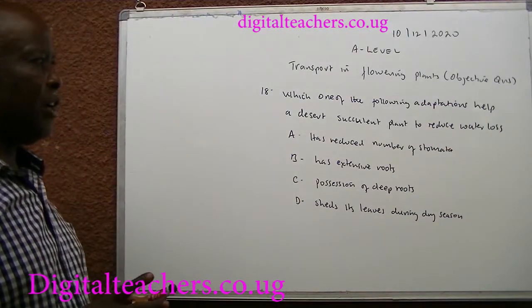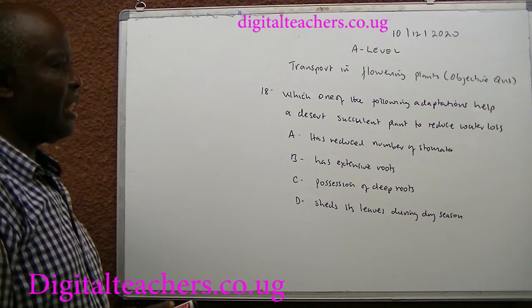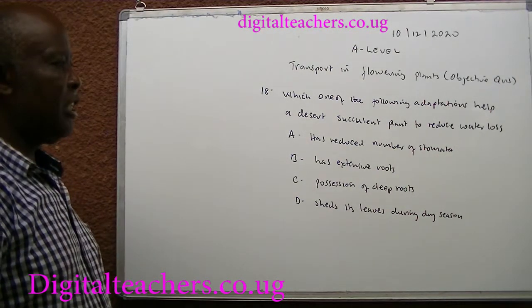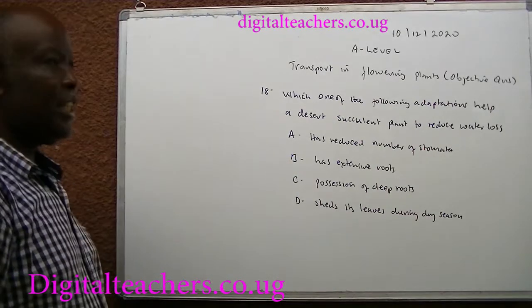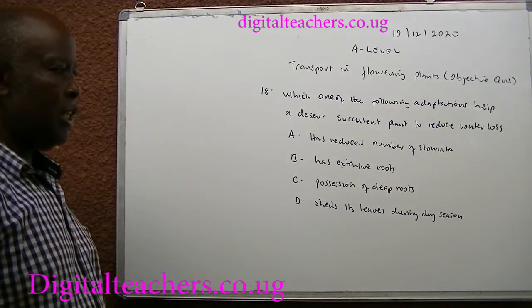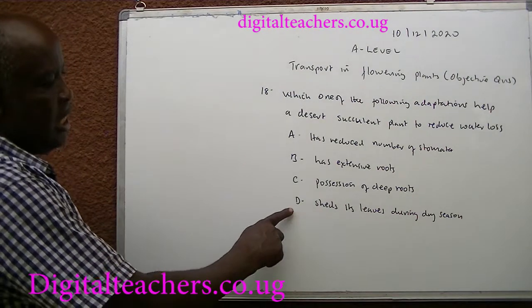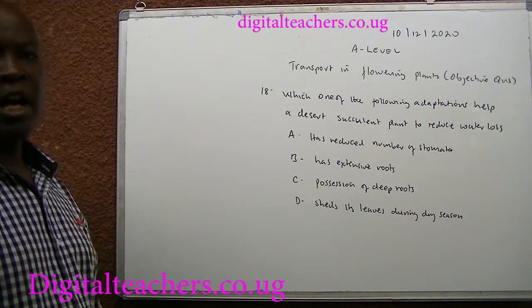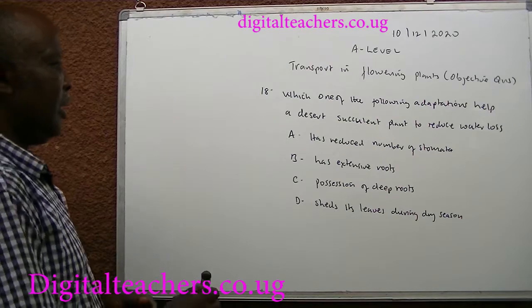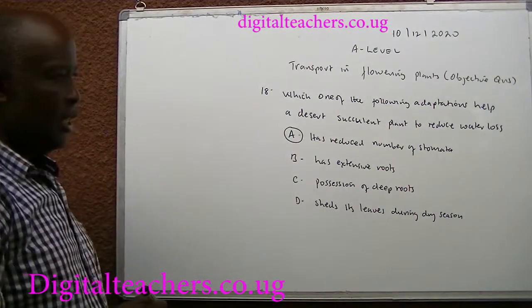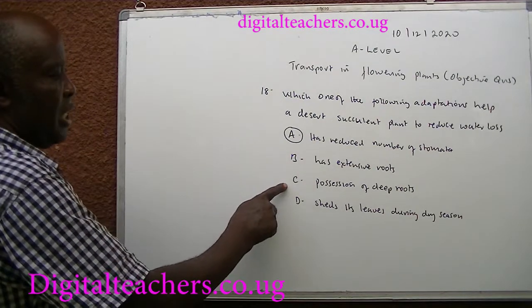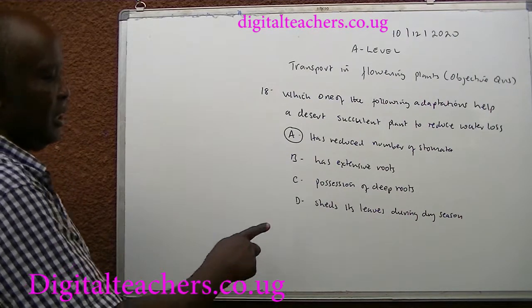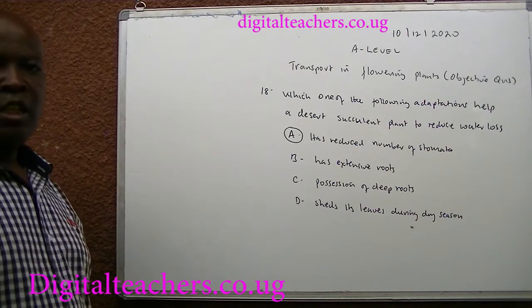Number 18. Which one of the following adaptations helps a desert succulent plant to reduce water loss? A. Has reduced number of stomata. B. Has extensive roots. C. Possession of deep roots. D. Shed leaves during dry season. You can pause and answer. The answer is A. Has reduced number of stomata. Extensive roots and deep roots help in absorption of water, not to reduce water loss. It does not have leaves to shed.